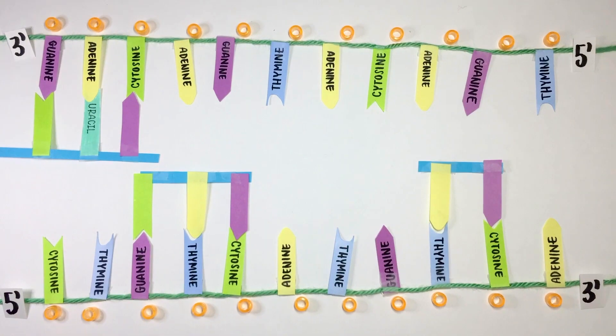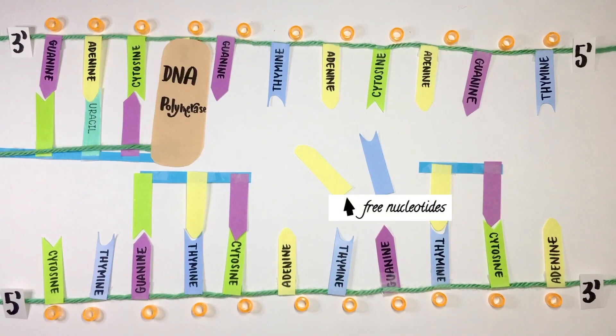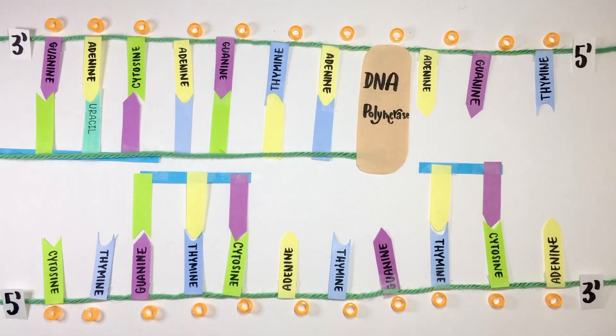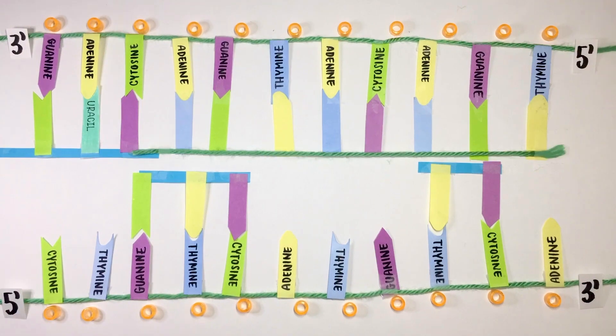Now, in a process called elongation, DNA polymerase 3 binds to the same site of the RNA primer and continuously adds new complementary base pairs to the strand from a 5' to 3' direction.